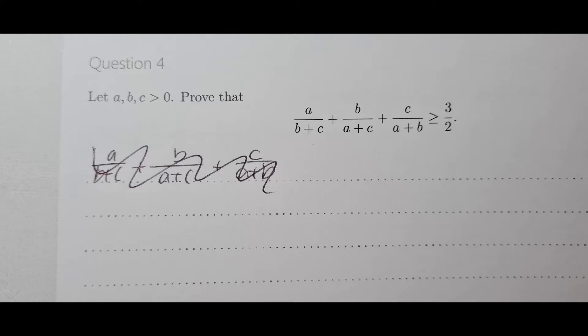For this video I'll be taking a look at a question that a student sent through — a proof question that says: if we let a, b and c be greater than zero, then prove that a/(b+c) + b/(a+c) + c/(a+b) is greater than or equal to 3/2.